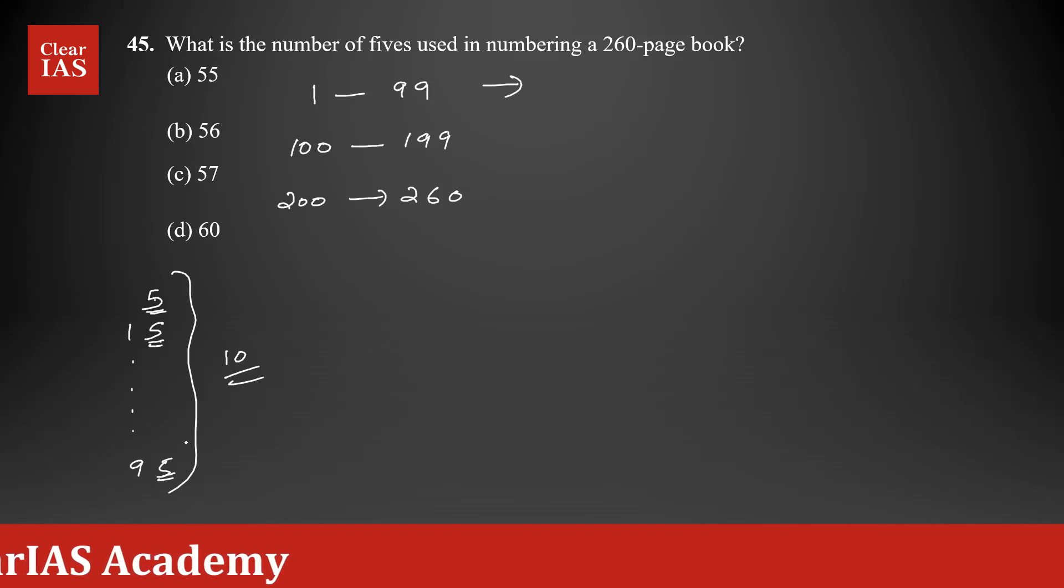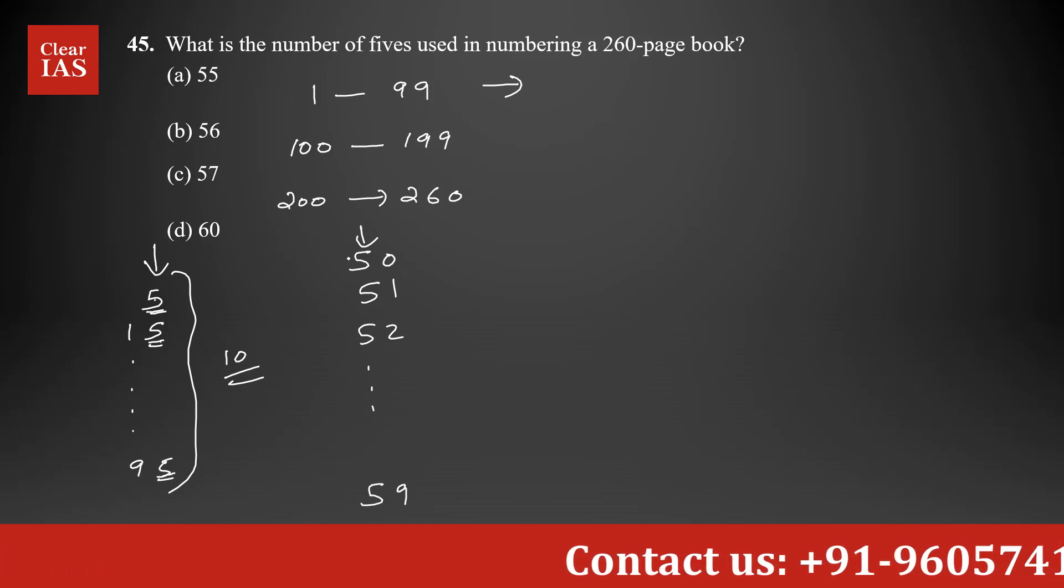Similarly, if you look at the tens digit, now we are focusing on the tens digit. What about 50? 5 is here, 51, 52, goes on until 59. How many 5s are coming here? There are 10 5s. If 0 to 9, there are 10 numbers, so 10 5s are here as well.